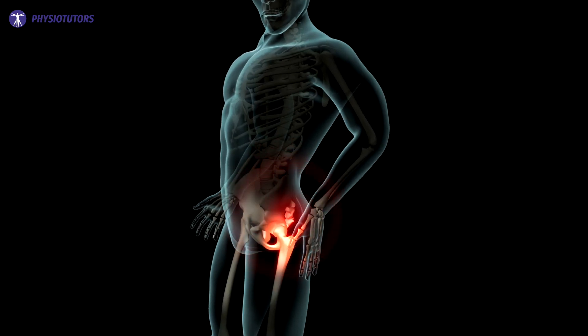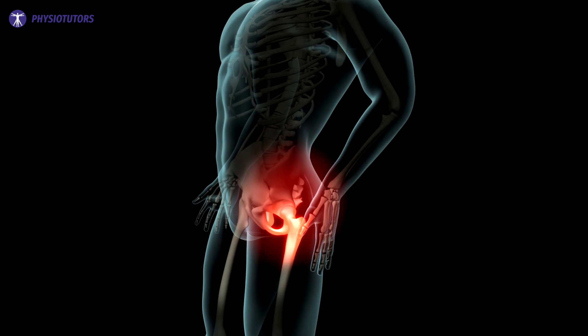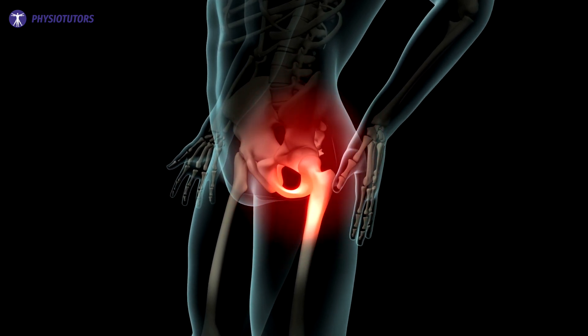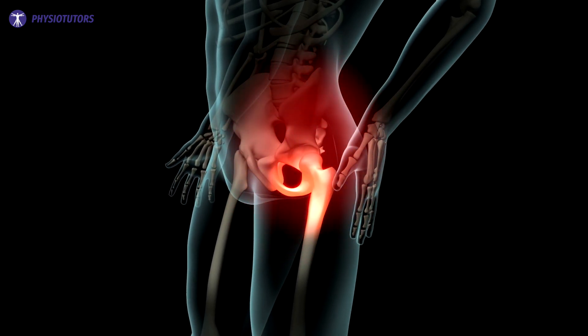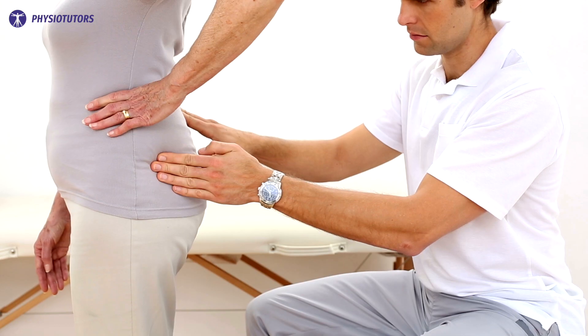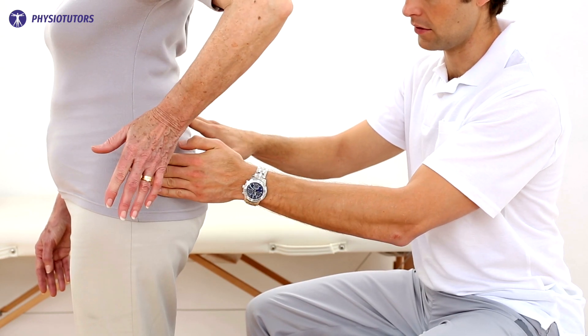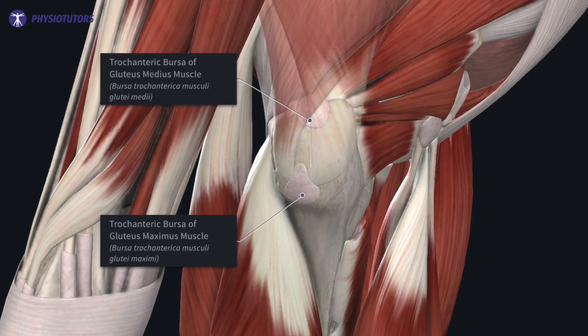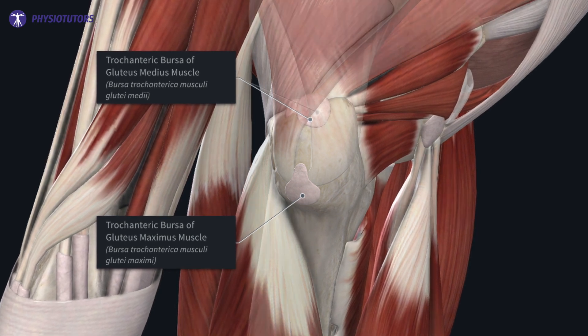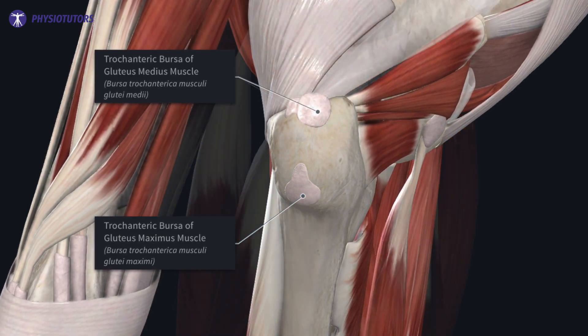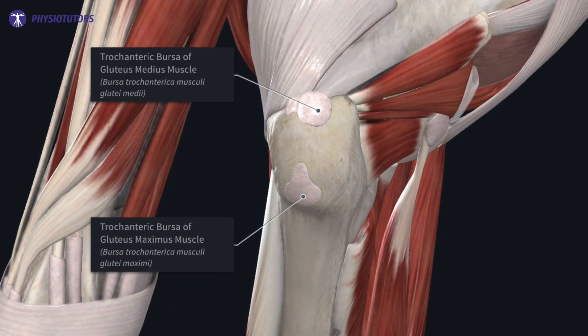Gluteal tendinopathy, or greater trochanteric pain syndrome, is characterized by tenderness laterally over the greater trochanter, and pain may radiate over the lateral thigh. It is most prevalent in women aged over 40 years, with some studies reporting that about a quarter suffers from it between 50 and 79 years old. Earlier we thought that the inflamed bursa at the trochanter was the key driver, but recent studies refuted this.